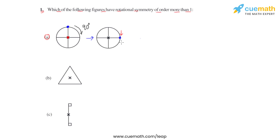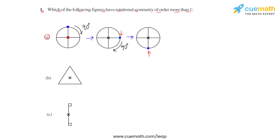Rotating again by 90 degrees in the same clockwise direction, after a total of 180 degrees rotation, we get the same figure again. The new position of the blue dot represents the 180-degree rotation. The figure looks exactly the same, and the blue dot change confirms the rotation.